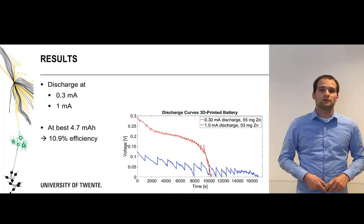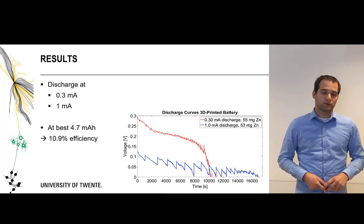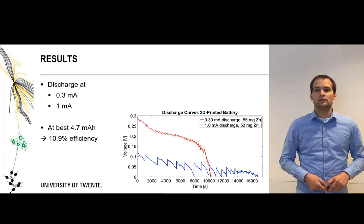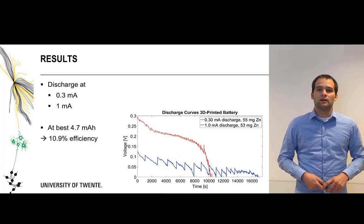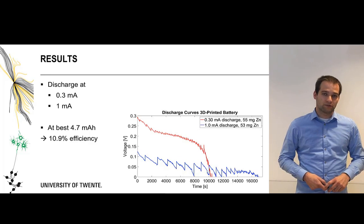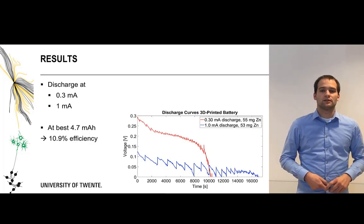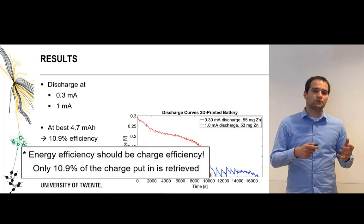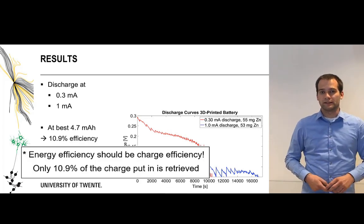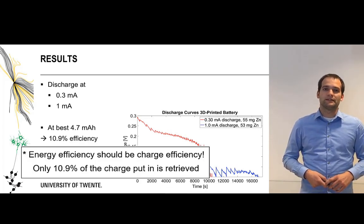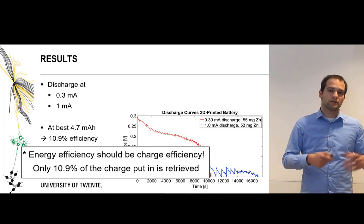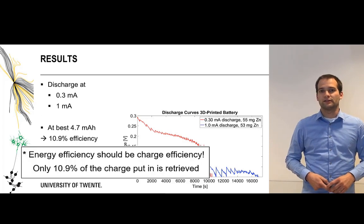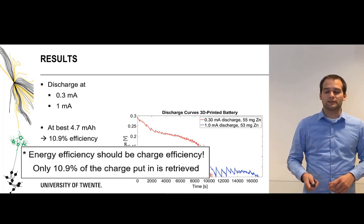We also performed discharge measurements with a discharge at 0.3 milliamps and 0.1 milliamps where we achieved the best capacity of 4.7 milliamp hours for the battery which gives you an efficiency of 10.9 percent. This means that if we take the energy we used for depositing the zinc on the surface, only 10.9 percent of the energy put in to get the zinc on the surface was obtained from the battery as energy so the rest gets lost somewhere in the system.